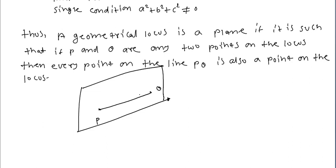Consider the equation ax plus by plus cz plus d equal to 0, with a squared plus b squared plus c squared not equal to zero. The locus of this equation will be a plane if every point on the line joining any two points on the locus also lies on the locus. For this, we have to choose two points P and Q.